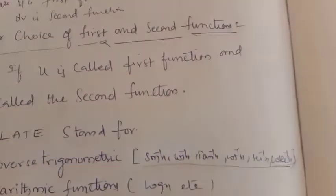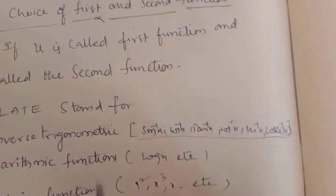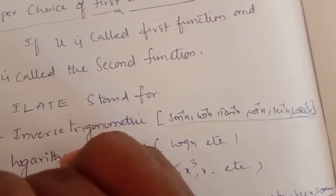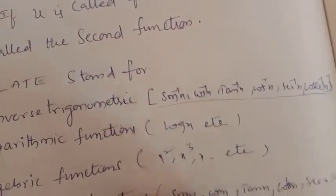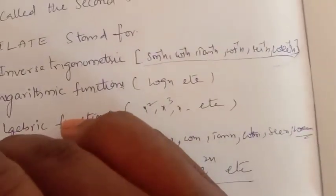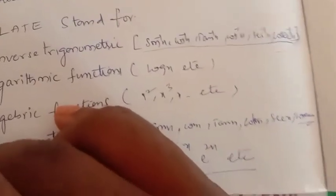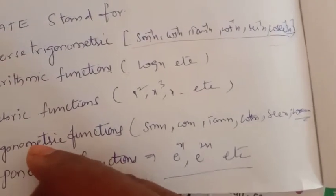As per ILATE rule, u is the first function and dv is the second function. The first function is selected according to the ILATE order: inverse trigonometric function is taken as u first, then logarithmic, then algebraic, then trigonometric, then exponential.